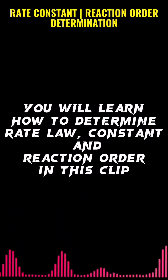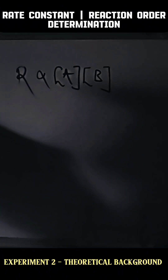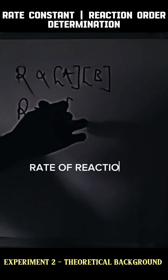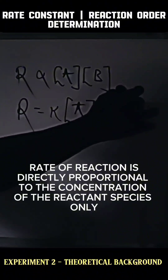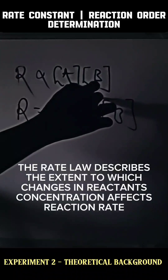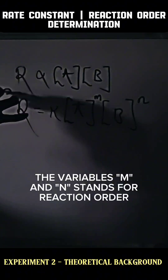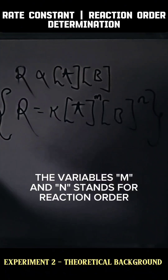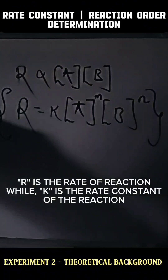Having learned how to calculate the rates of a reaction in the previous video — where rate is proportional to the concentration of the various reactant species — we are now going to learn how to determine the rate law and the reaction order. This is the general representation of the rate law with integers m and n, and the essence of this video is how we experimentally determine the rate law of a given reaction.